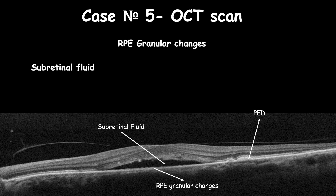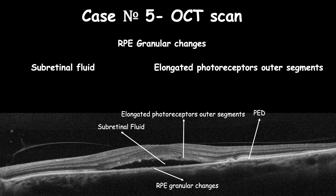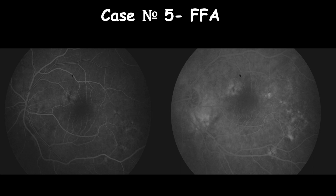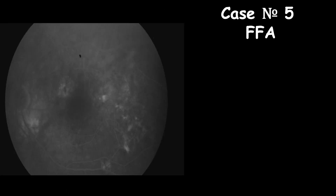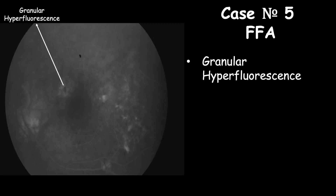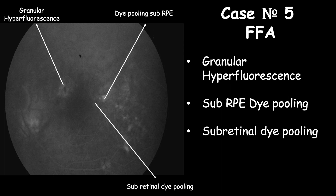There is also elongation of photoreceptor cells and increased thickness of the choroid. Fluorescein angiogram in early phase shows hyperfluorescence from granular RPE changes, which increases and becomes more prominent in the mid-phase with hyperfluorescence from PED. In late phase, there is granular hyperfluorescence with sub-RPE and subretinal pooling. The diagnosis is chronic central serous retinopathy.